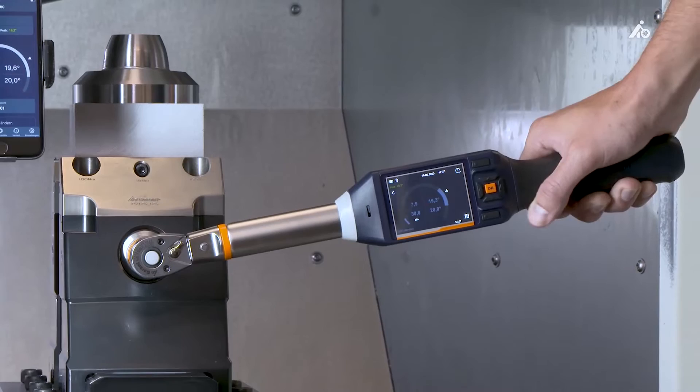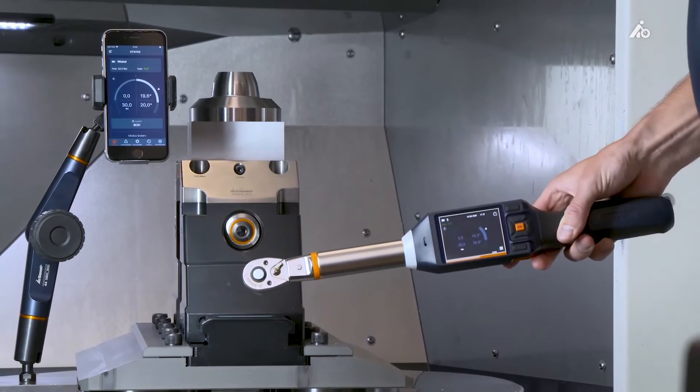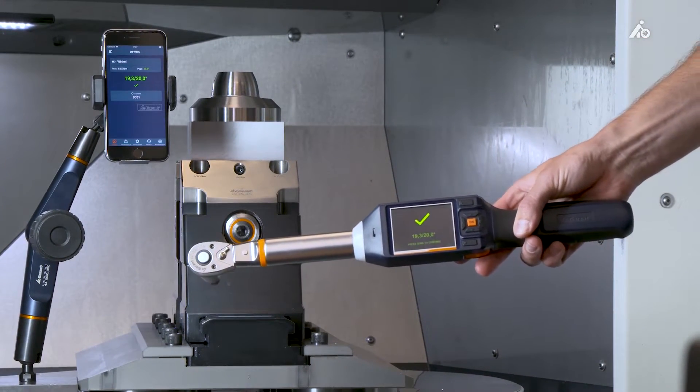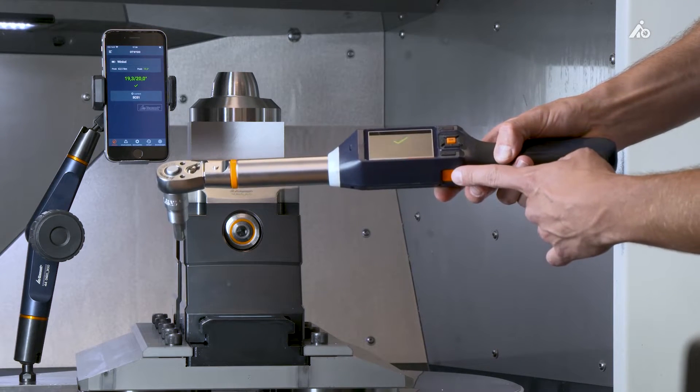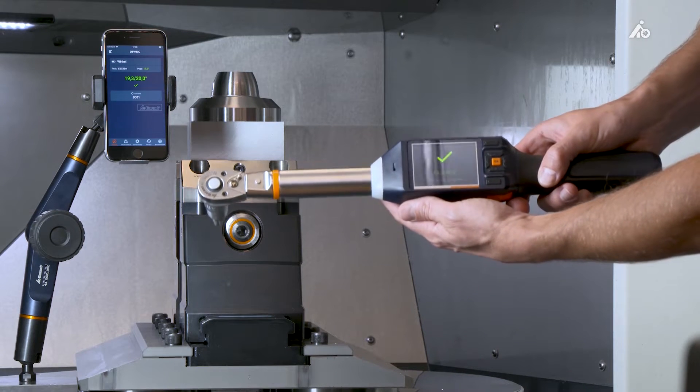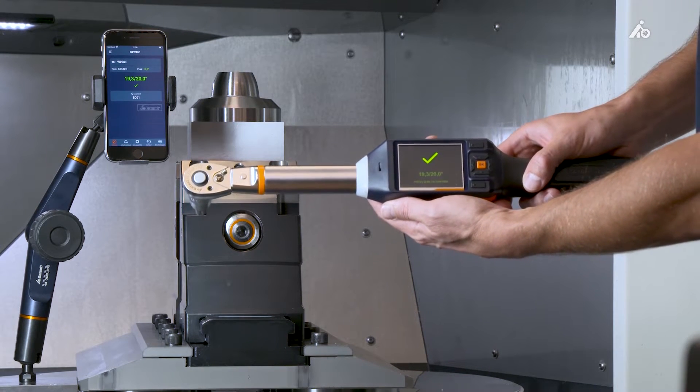If I now relieve the load, the wrench evaluates the screw joint after a set evaluation time or manually using the push-button below. In our case, with 19.3 degrees, we now have reached the target value range and the screw joint has been evaluated as positive.